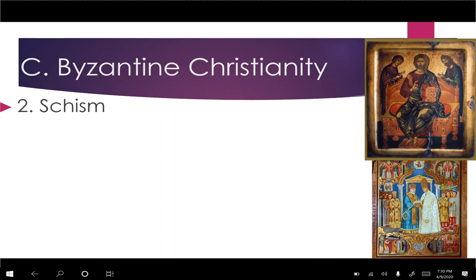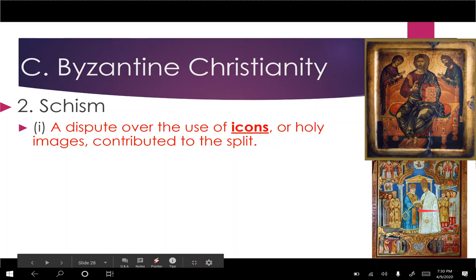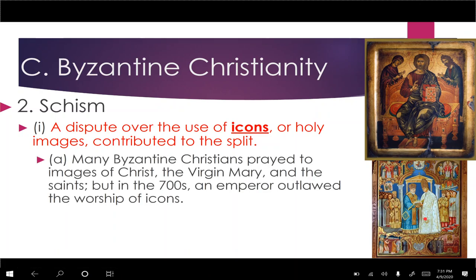There were many schisms — splits — between the churches, but perhaps the biggest was the Schism of 1054, over icons and church authority. Icons are holy images depicted in art — images of Christ, Mary, bishops giving blessings. Many Byzantine Christians prayed to these images, to the Virgin Mary, and to different saints, just as in the Roman Catholic Church. But then the emperor outlawed this practice.